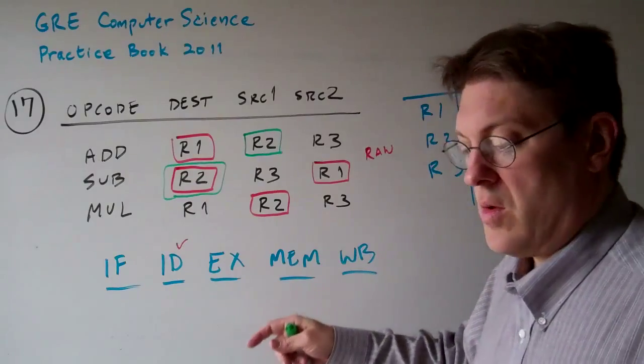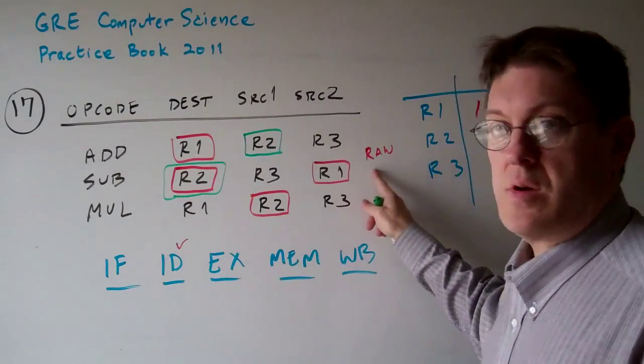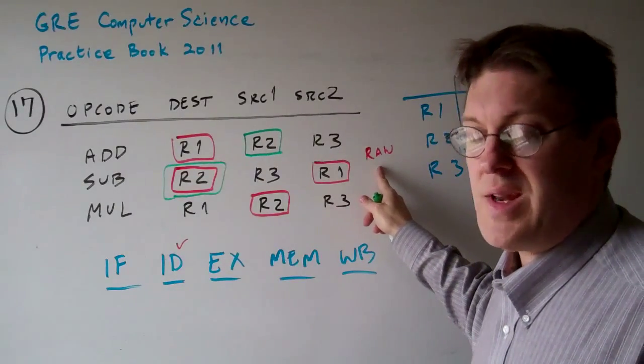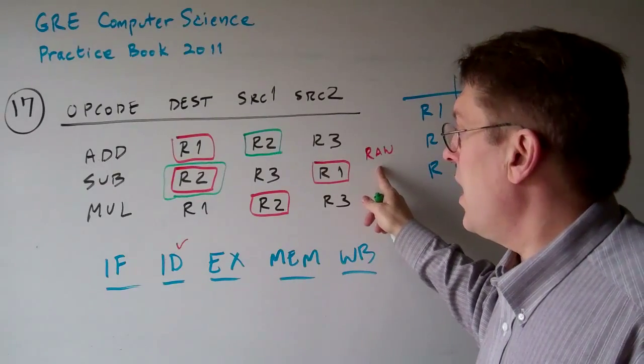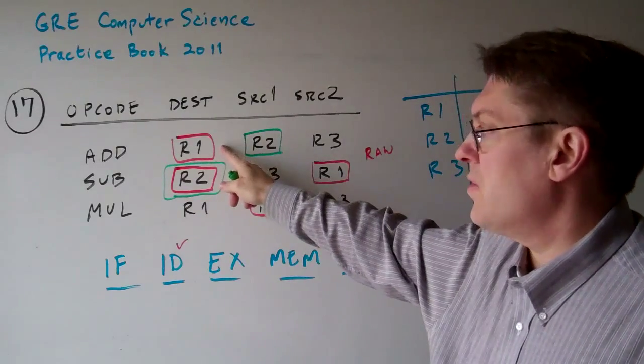First, there's a thing called a RAW hazard, read-after-write. And the problem is this. Take for example here.